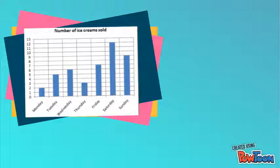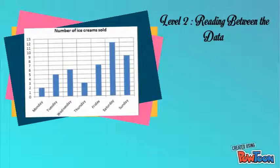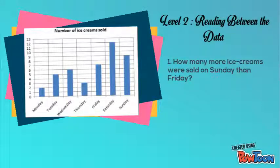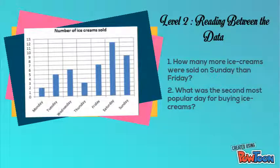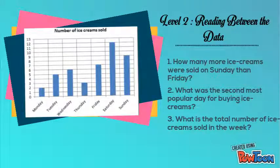Next, we will be creating level 2 questions — reading between the data. How many more ice creams were sold on Sunday than Friday? What was the second most popular day for buying ice creams? What is the total number of ice creams sold in the week? If you notice, there is some kind of relationship between pieces of data in the questions — for example, the number of ice creams sold on Sunday compared to Friday. There are also mathematical operations involved here. Remember: if the total number is given in a table and is explicit, the question will fall under level 1.